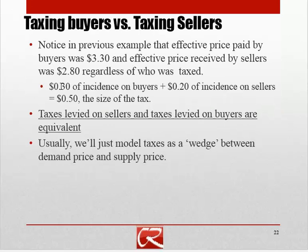Notice that these two numbers add up to $0.50, which was the overall size of the tax, and this is always going to be true. The economic harm suffered by the buyers, plus the economic harm suffered by the sellers, has to add up to the overall size of the tax. And it's almost never split exactly equally, just like it isn't in this case.